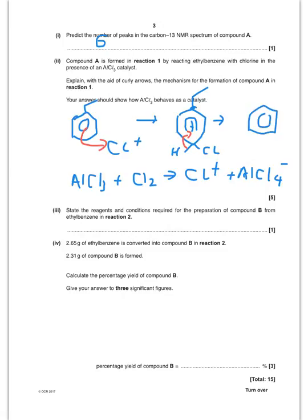Like so, Cl like so, plus H+. And then finally the H+ reacts with the AlCl4- to give me AlCl3, so produce my catalyst, plus HCl like so.